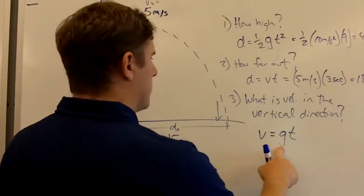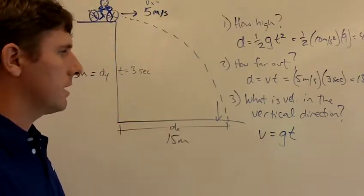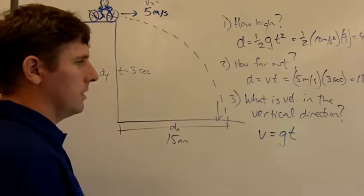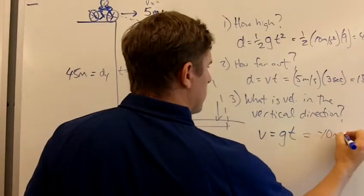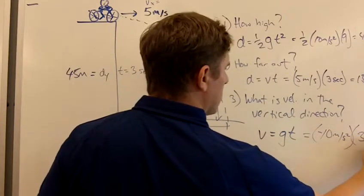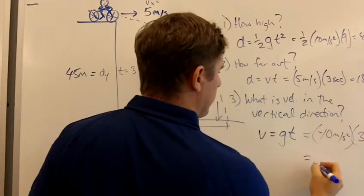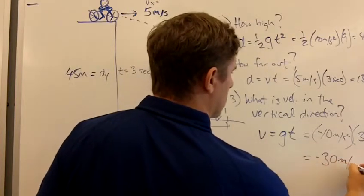Again, we have to have g because it's vertical, and anytime something has vertical velocity it's going to be accelerating if it's a free fall thing, and that's what this is. So here we need negative 10 meters per second squared for g. T is 3 seconds, so the vertical velocity is negative 30 meters per second.